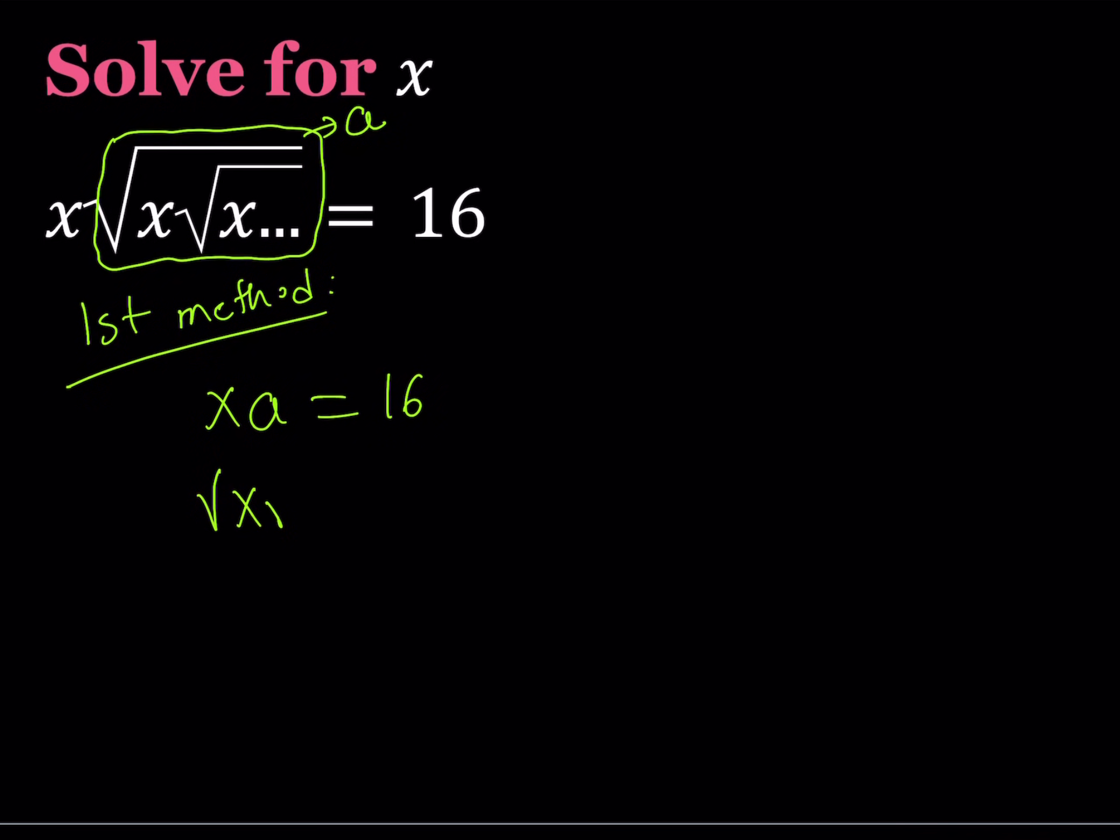And where does that come from? Well, it automatically gives us the assumption or the substitution gives us this equation that the radical thing, the square root of x times the square root of x times the square root of x dot dot dot equals a. So this is our system of equations and we're going to solve for x.